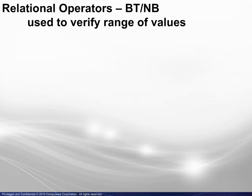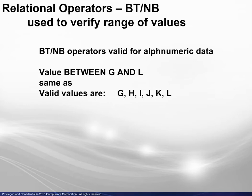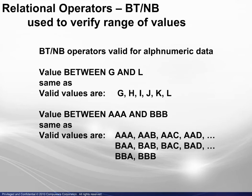The between and not between operators may be used for alphanumeric data as well as numeric data. A value between G and L is the same as valid values being G, H, I, J, K, and L. A value between AAA and BBB is the same as the valid values that are shown here.